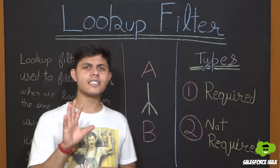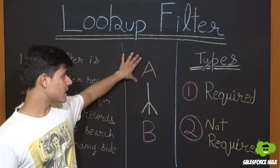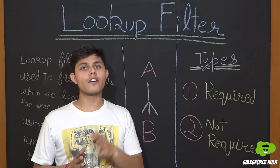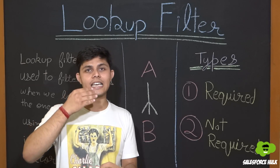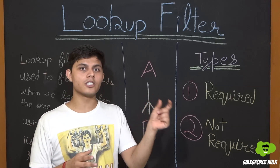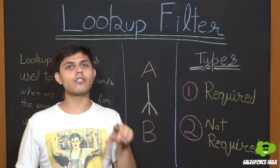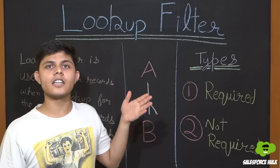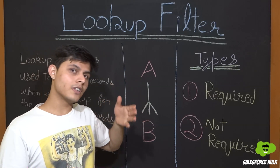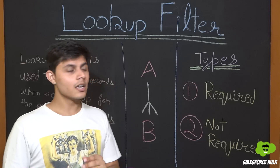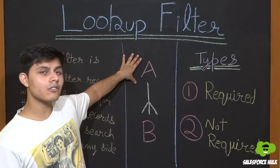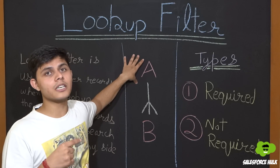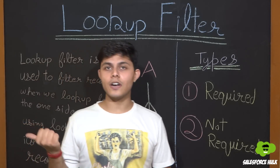Let's say there are two objects, Object A and Object B. Object A is on the one side and Object B is on the many side. Whenever we create a record of Object B, we need to relate it to Object A's record using the lookup search icon. When we click on that icon, a lookup dialog appears with certain records of Object A. We can filter which records should be available in that lookup dialog to relate with Object B's record, and that can be controlled by lookup filters.